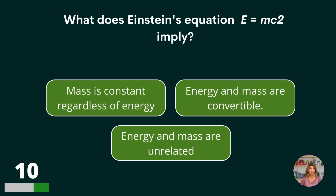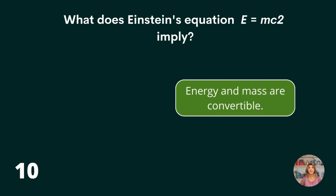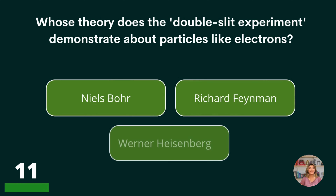What does Einstein's equation E equals mc² imply? Mass is constant regardless of energy, energy and mass are convertible, or energy and mass are unrelated? Energy and mass are convertible.